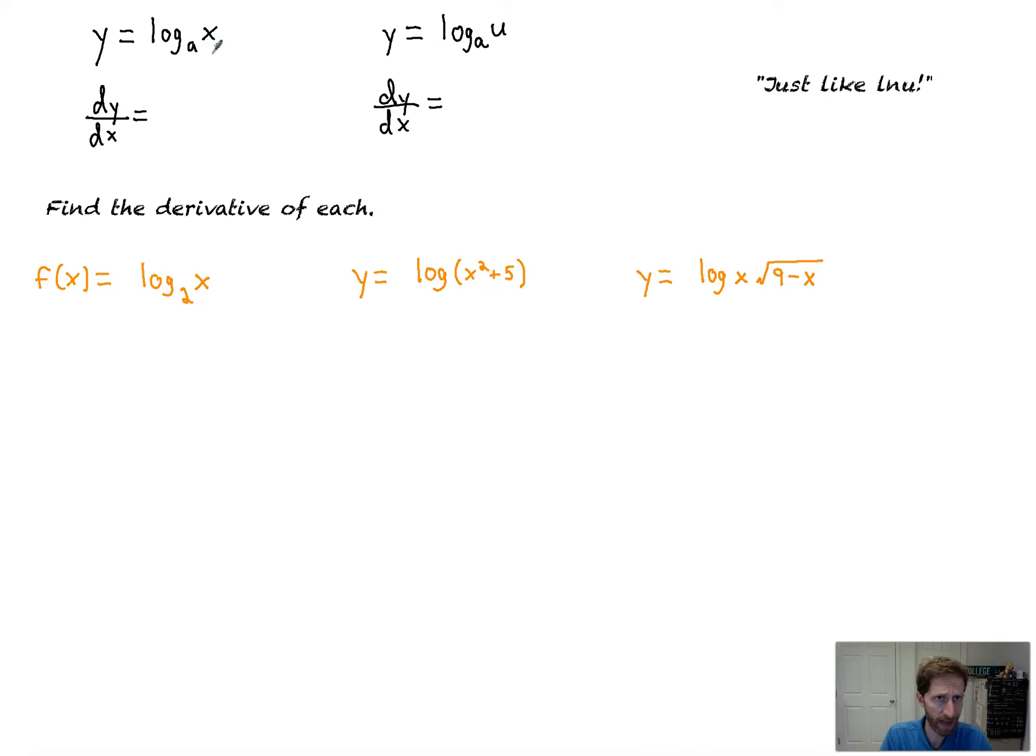So if you've got log base a of x, that's the same as doing 1 over x ln a. If you've got a u function, so like a function within a function, get a little chain rule, that's going to be 1 over u ln of a times u prime.